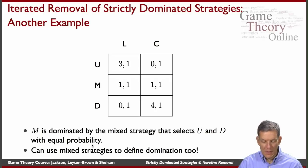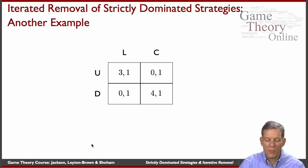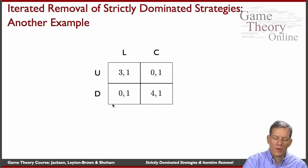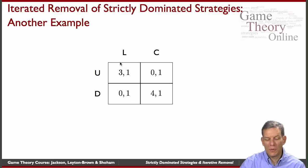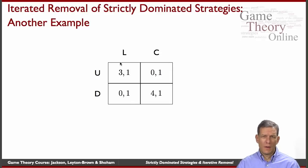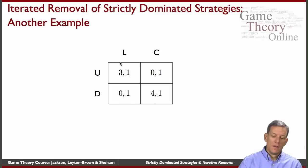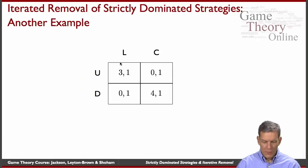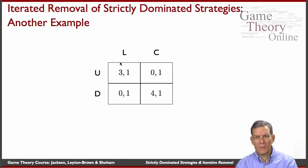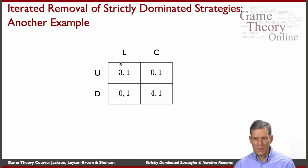So M is dominated by the mixed strategy that selects U and D with equal probability, and we can still get rid of M. We're down to a reduced game. This game doesn't really reduce any further — the column player is indifferent, and the row player likes up better if the column player goes left and likes down better if the column player goes right. So you'd have to take further analysis. If you want to solve for the Nash equilibrium in this game, there are in fact an infinite number of Nash equilibria given that the column player is fully indifferent. But the iterative elimination still gave us a lot of predictive power by collapsing the game down to a much simpler one.